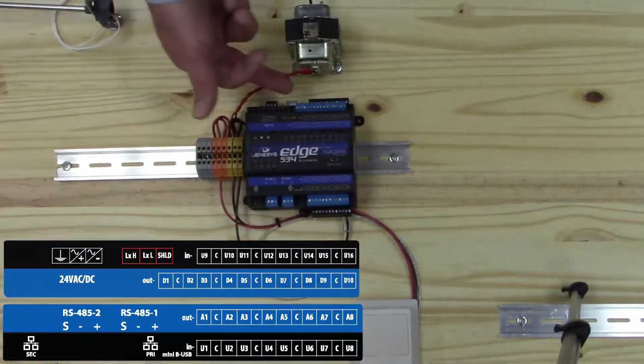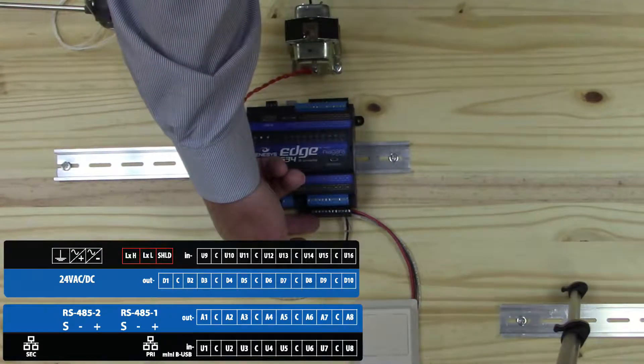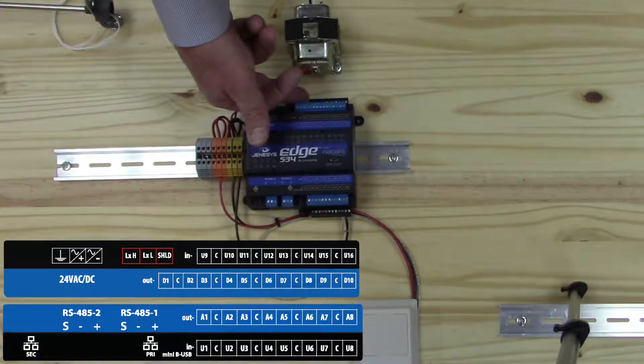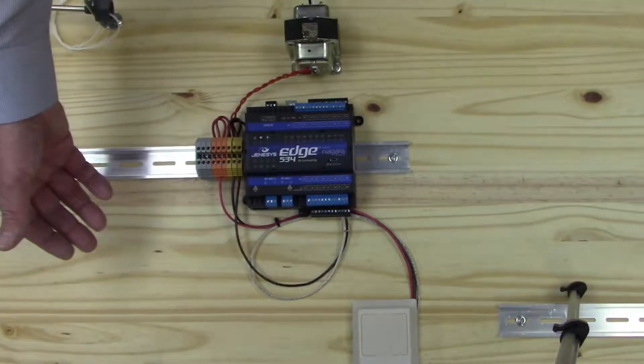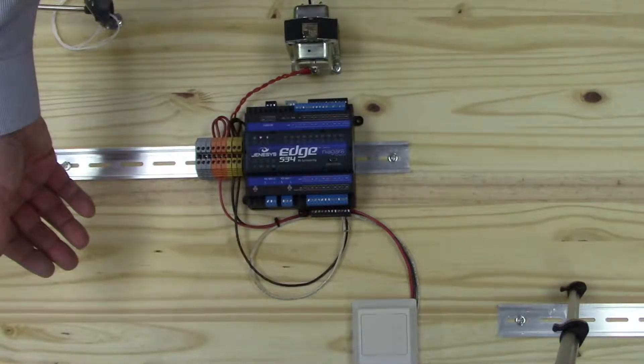On the bottom board are 16 total universal inputs, of which we're going to provide the signal from our 4 to 20 milliamp humidity sensor.